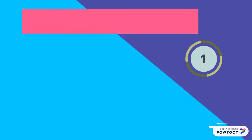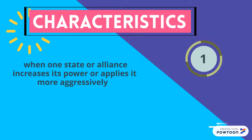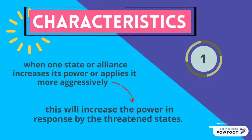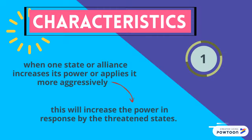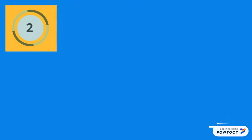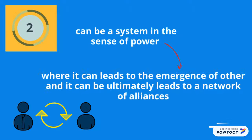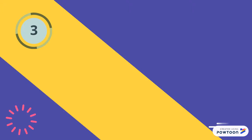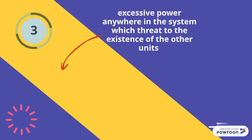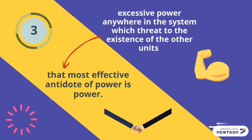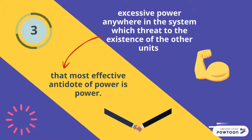The first characteristic of balance of power is when one state or alliance increases its power or applies it more aggressively, this will increase the power in response by the threatened states. The second characteristic is that multiple balance of power can be a system of power but it can lead to the emergence of a network of alliances. The third characteristic is that excessive power anywhere in the system leads to the existence of other units, and that the most effective antidote of power is power.